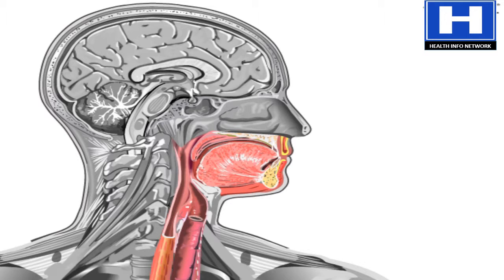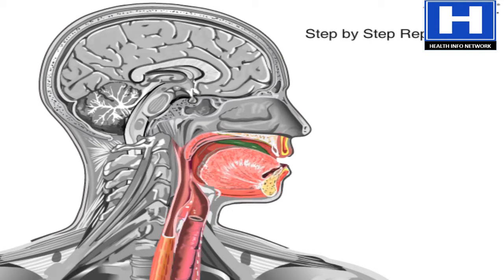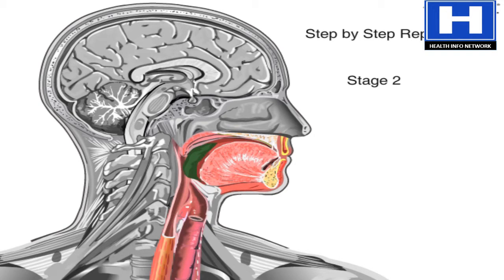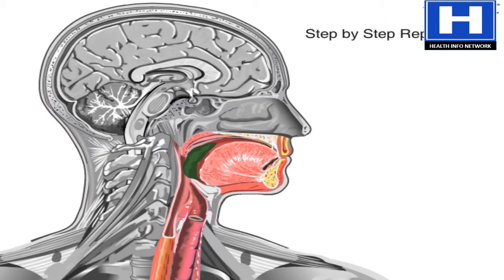Let's watch the swallowing process again. First, the tongue pushes the food into the throat. Next, the epiglottis — a small but important flap of tissue — folds over the voice box at the top of the windpipe. This keeps food from going down the wrong way.